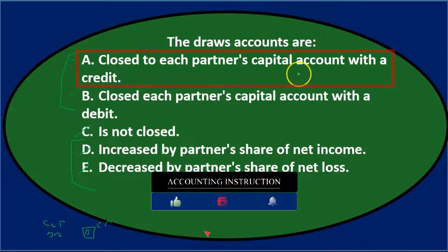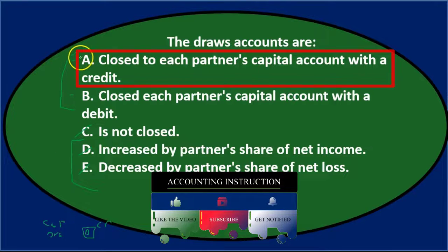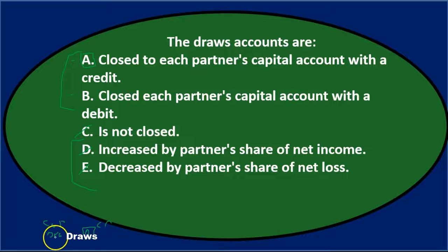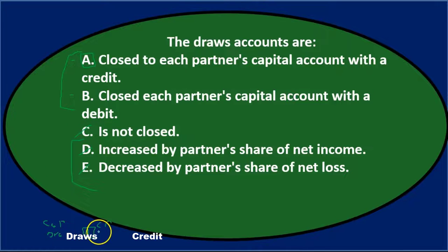That makes sense: the capital account represents what is owed to the owner, and it should go down by the amount the owner took out for personal use. So the draws account is closed with a credit — meaning answer A: closed to each partner's capital account with a credit. The draws account is closed out with a credit, and the capital account is debited.